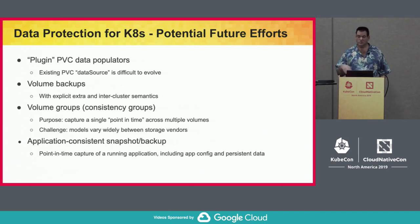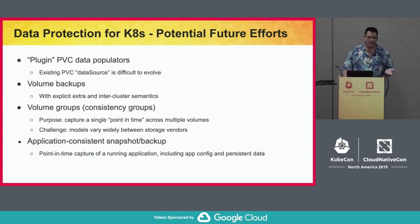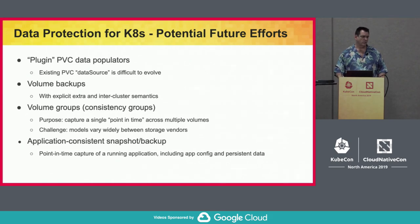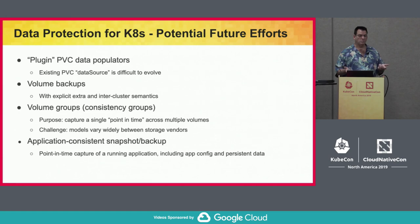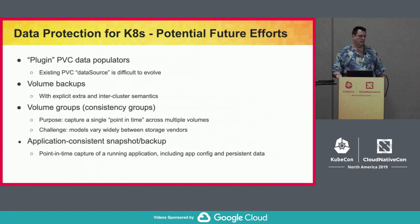We've also talked about volume groups — doing multi-volume operations consistently, so a single point-in-time capture across multiple volumes, applicable to both snapshots and backups. The last topic, which Yanan will cover, is application consistency. Everything so far has been storage-level. Some applications can do crash-consistent recovery, but in other cases — multiple unsynced volumes or applications not written that way — what gets captured during active operations isn't usable. You need a quiesce or flush operation where the workload itself cooperates with the capture process.